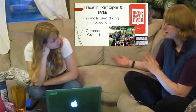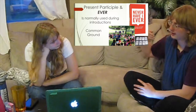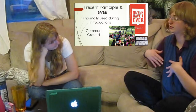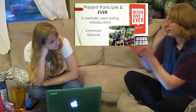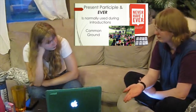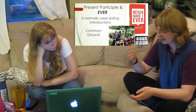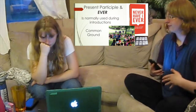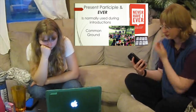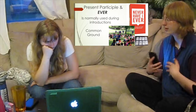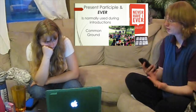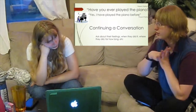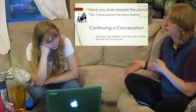In Never Have I Ever, someone says something they have not done, and everybody responds using the present perfect tense. To continue a conversation using this, you don't continue with the present perfect — you use the other tenses you've learned. So if you ask 'have you ever played the piano?' and they respond 'yes, I have played the piano,' then you'd want to ask about their feelings, when they did it, where they did it, and for how long.